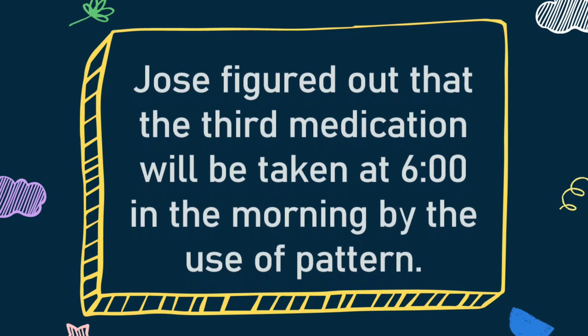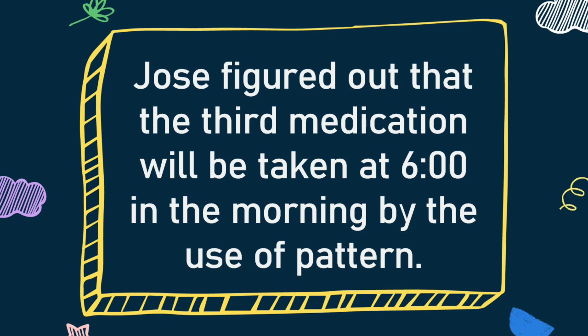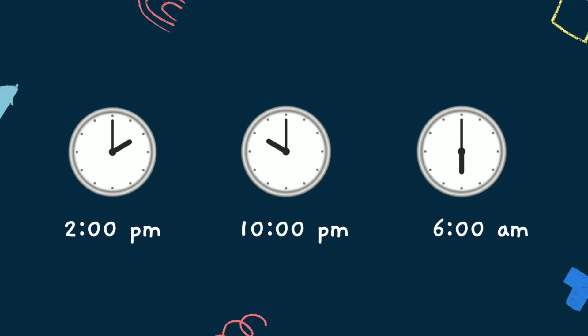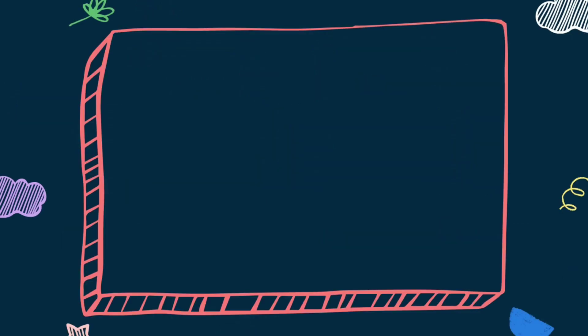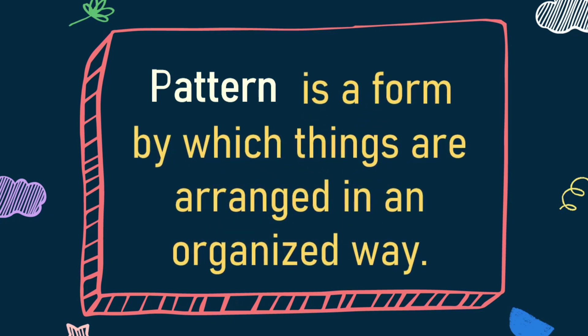Now, let's go back to our discussion. Jose figured out that the third medication will be taken at 6 o'clock in the morning by the use of pattern. Based from the illustration presented, we noticed that the time interval between the scheduled medication is 8 hours. But what is a pattern? A pattern is a form by which things are arranged in an organized way.